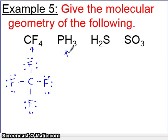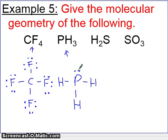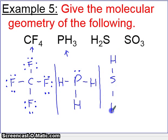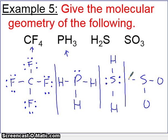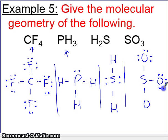For PH₃, you'll have a similar structure — a phosphorus in the middle with three hydrogens around the outside. The hydrogens don't need any more electrons, and we put a lone pair on phosphorus. H₂S would look like this — a sulfur in the middle and two hydrogens around it; hydrogens don't need more than two. And SO₃ will have three oxygens on the outside, lone pairs filled in, and a double bond.